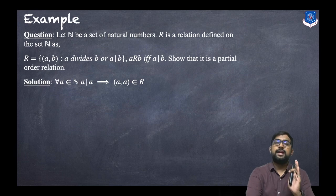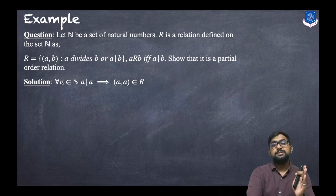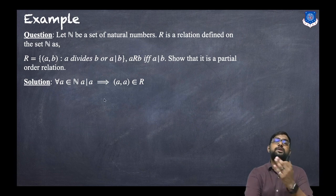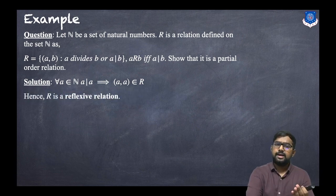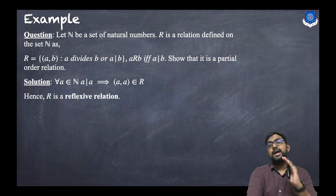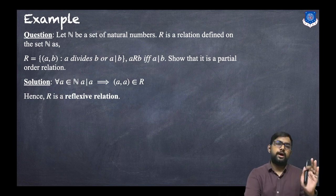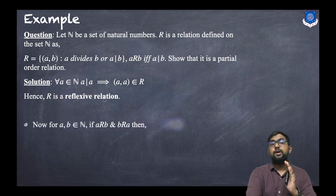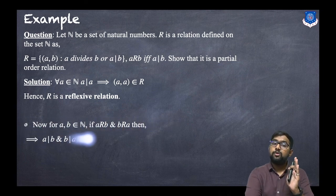For reflexivity: for every a belonging to N, a divides a — that means every number divides itself. So the ordered pair (a, a) belongs to the given relation. Hence R is a reflexive relation, since every number divides itself.